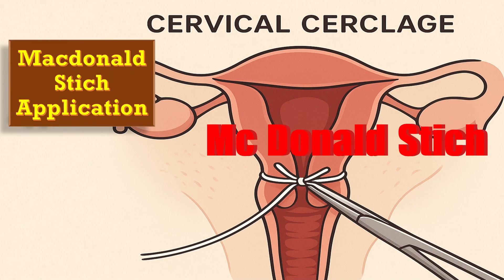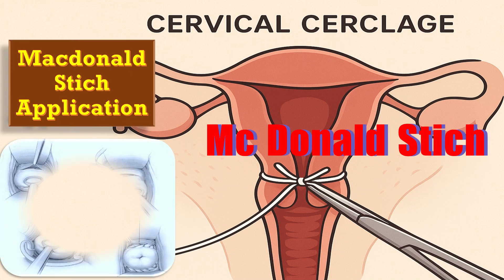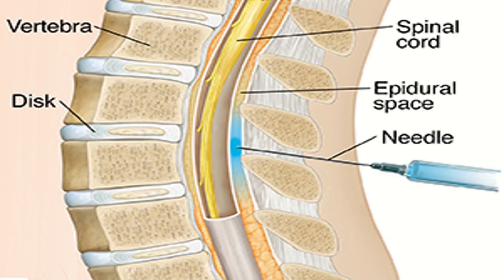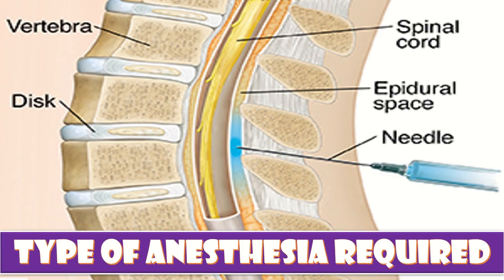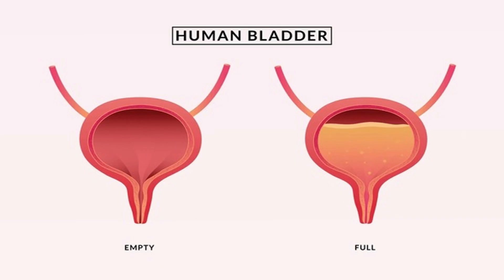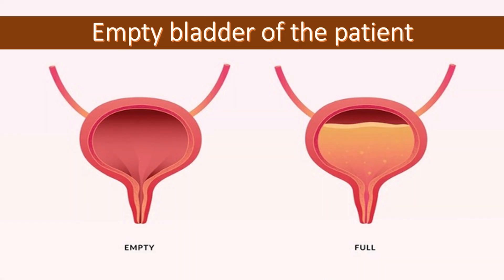Cervical cerclage or McDonald's stitch application is the topic of our discussion today. The type of anesthesia required is spinal anesthesia. The position of the patient for cervical cerclage is the dorsal lithotomy position. The bladder should be emptied first.